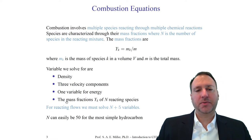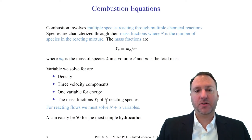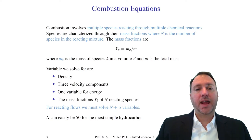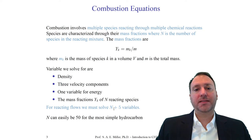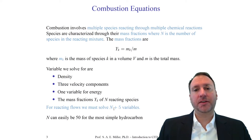We also have to set equations for each mass fraction y sub k for n reacting species. Therefore, in a classic computational combustion problem using CFD of a reacting flow, we'll have typically n plus 5 unknown variables. n can easily be 50 or 60 for a simple hydrocarbon, or it could be 5,000 or 6,000 for a fully resolved combustion engine and typical fuel. So it can be a very large number of equations and the computational problems are often intractable.